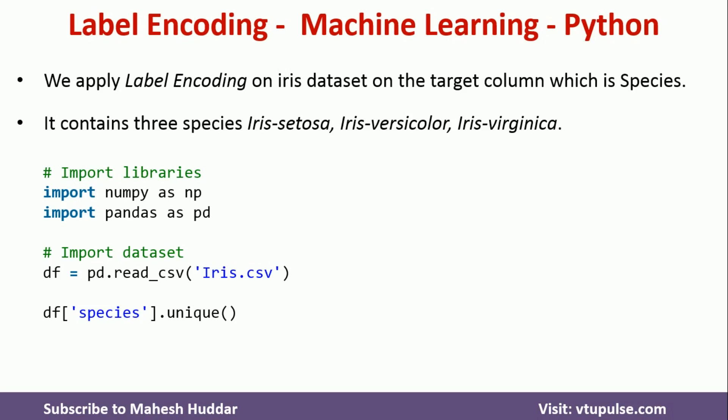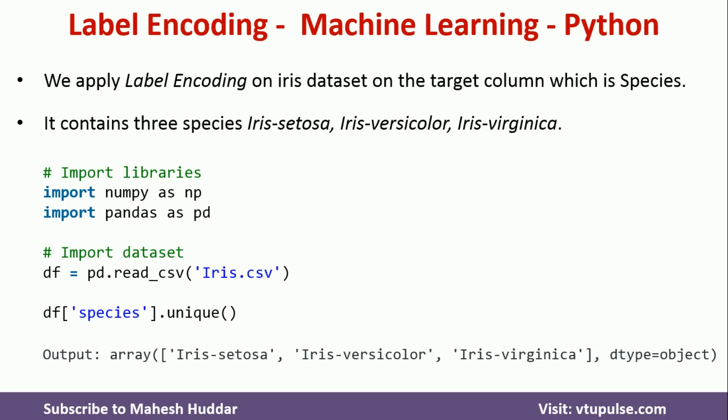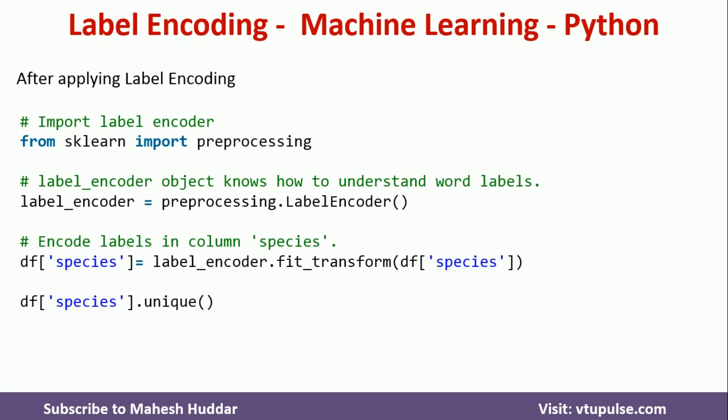After that I will print the unique values from the target column species. The output contains three possible values: iris setosa, iris versicolor, and iris virginica. All of these labels are in word format, and as mentioned, they cannot be given to any machine learning algorithm, so we will apply label encoding on this species column.